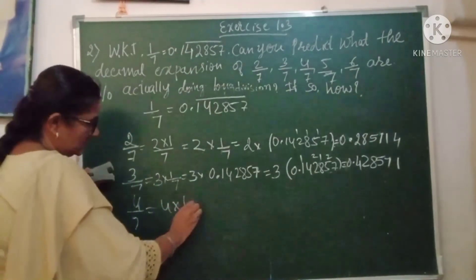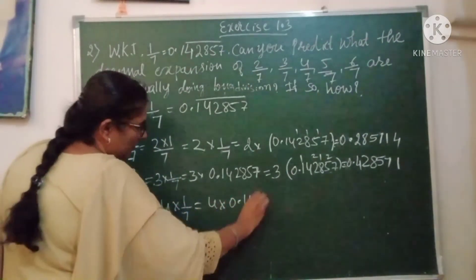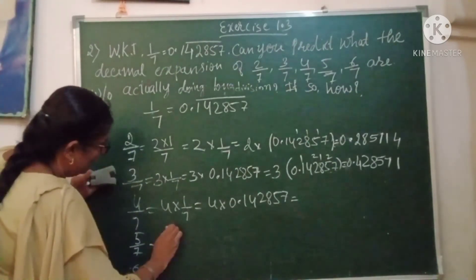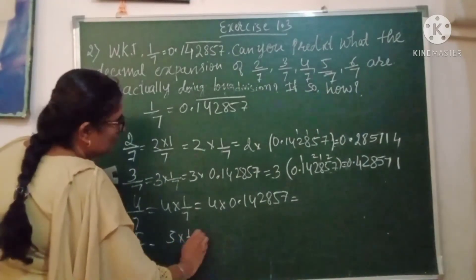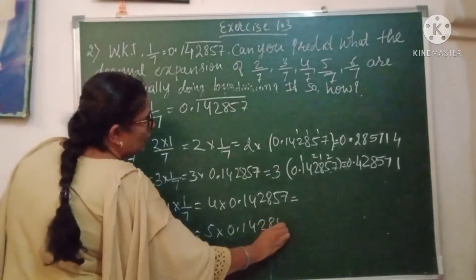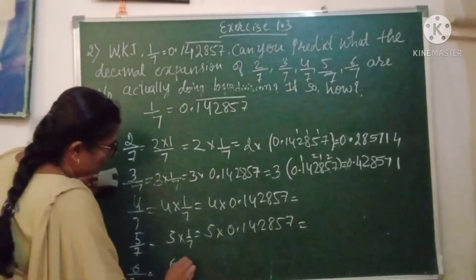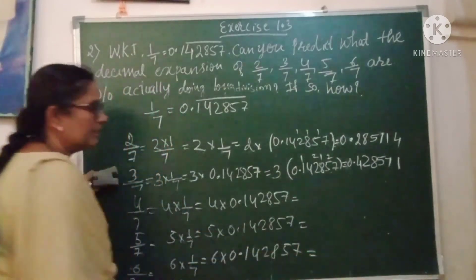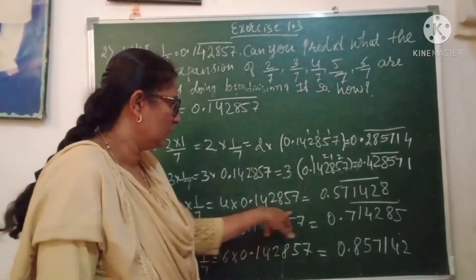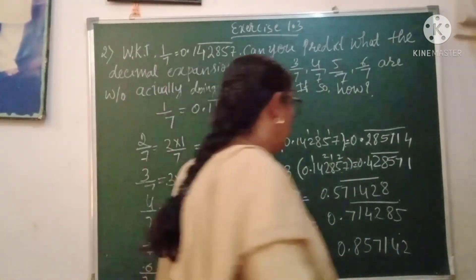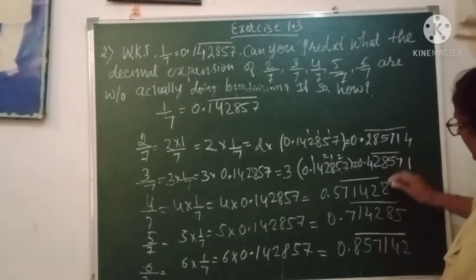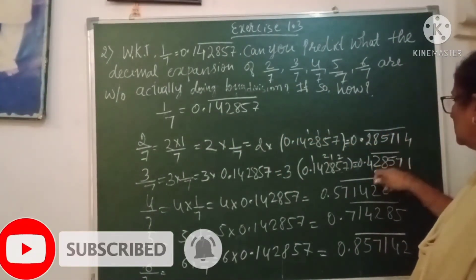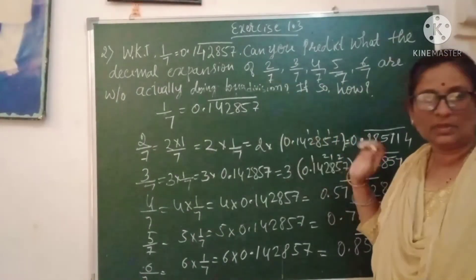In the same way, 4/7 means 4 × (1/7), so multiply 4 × 0.142857 to get the answer. For 5/7: 5 × (1/7) = 5 × 0.142857. For 6/7: 6 × (1/7) = 6 × 0.142857. You multiply and get the respective repeating decimals. The bar is placed over the repeating digits in each result. This is how you solve the problem without actual long division.